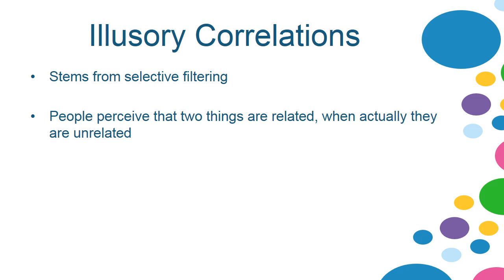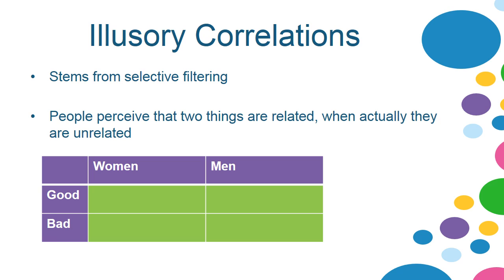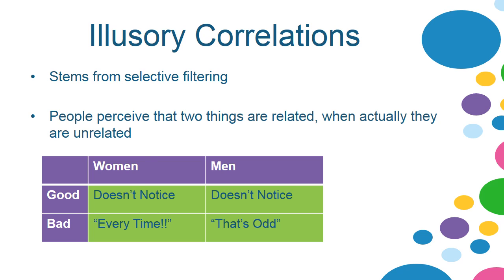Illusory correlations stem from selective filtering and they occur when people think that two things are related when they're actually unrelated. For example, I have an aunt who thinks that women make terrible parallel parkers. What happens is when she sees somebody who's parallel parking, she checks the gender. If it's a woman, she thinks every time a woman is trying to parallel park, she's just not doing well. And if it's a man, she thinks it's kind of weird that he isn't parallel parking well. She doesn't even check if the person is actually parking well. So she sees a correlation between gender and parallel parking quality because she has very specific memories of seeing bad women parallel parkers — that's an illusory correlation.